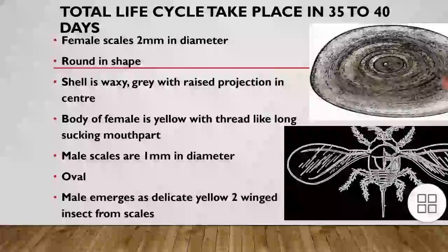Control: Biological control can be achieved through natural enemies or predators. Spray 3% miscible oil at the rate of 6.8 liters per tree in winter. Apply petroleum oil in summer. Fumigation with HCN gas can also be done.